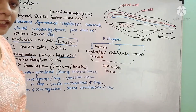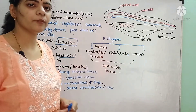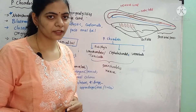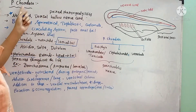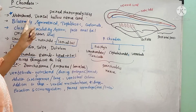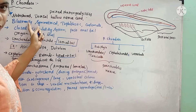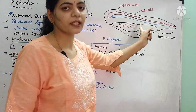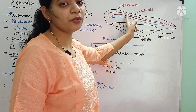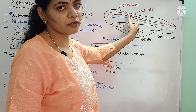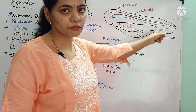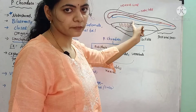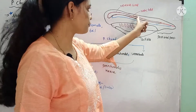You see the chordates — why they got the name? They have the presence of notochord, so they are called as chordates. These chordates consist of notochord. In addition to that notochord, they have a dorsal hollow nerve chord. This red color region is called as nerve chord, and the blue colored one below is called as notochord.